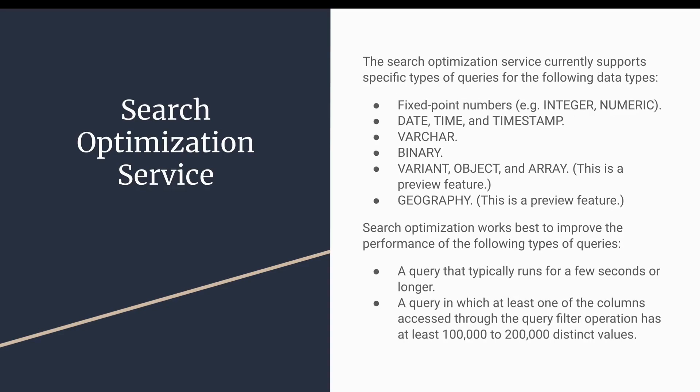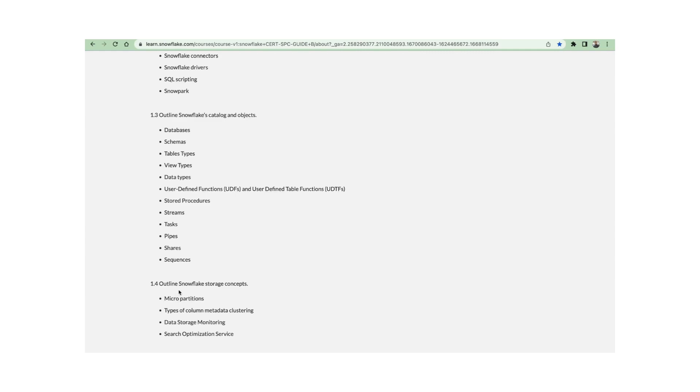The supported data types include integer, numeric, date, time, timestamp, varchar, and binary. Variant, object, array, and geography are currently in preview only. The search optimization service is most beneficial when filtering on one column and retrieving only one or two records out of 100,000 or 200,000 distinct values — it will give you optimized results. It is not necessary for every table, as enabling it unnecessarily will only increase overall cost.